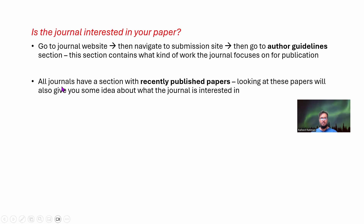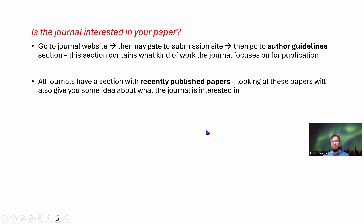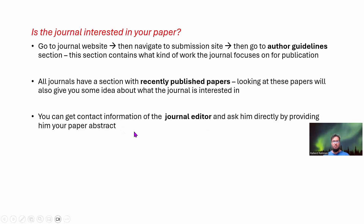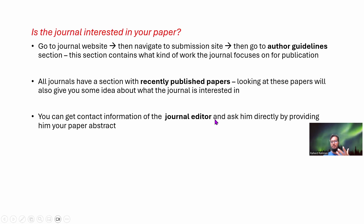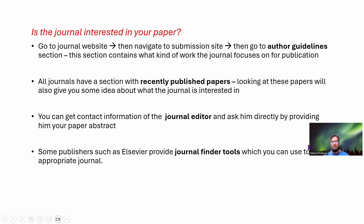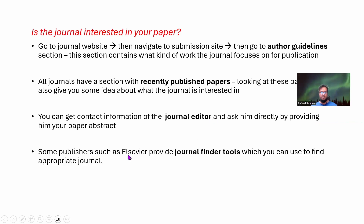Another way is to navigate to the section with recently published papers — looking at these papers will also give you some idea about what they actually want in recent years. You also have someone called the journal editor who handles all publications. In the contact information section of the journal you can find an email address for the editor, and you can send them your abstract and ask whether they are interested in your paper. Finally, some publishers such as Elsevier provide journal finder tools where you can write your keywords and abstract to directly search for relevant journals, but not all publishers have this tool.